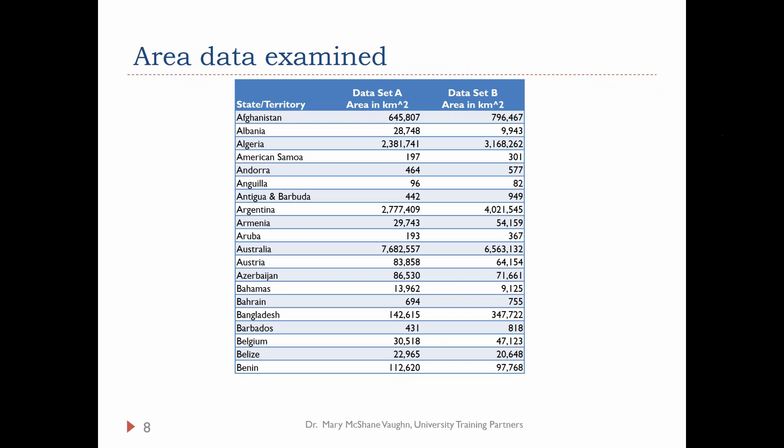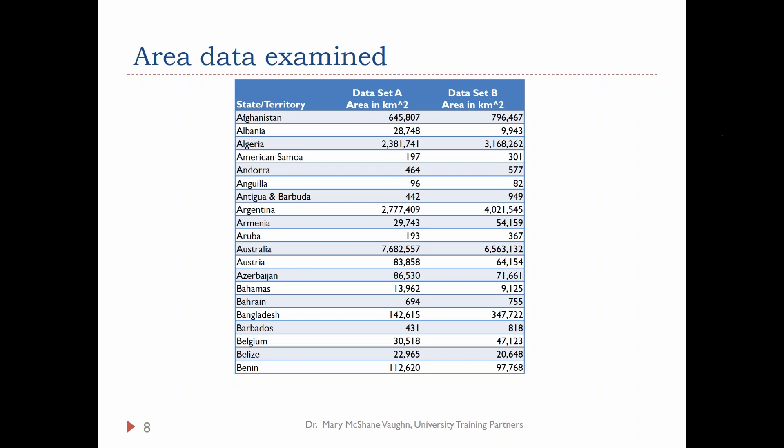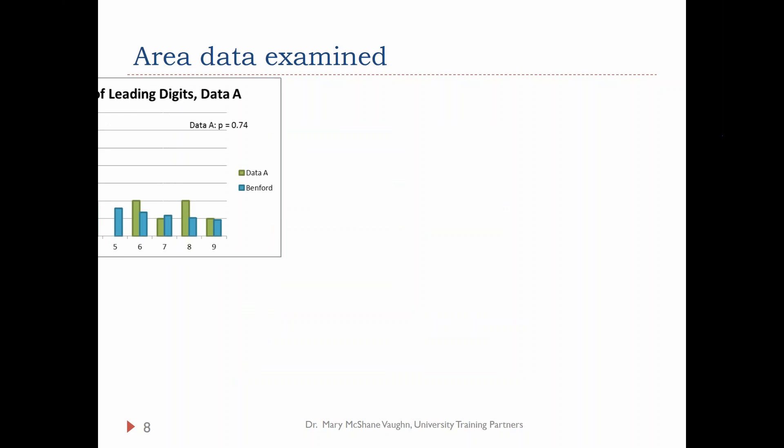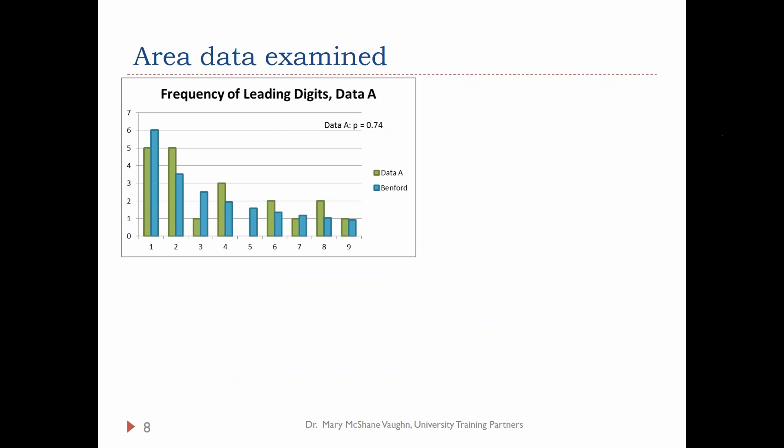Getting back to our areas of countries, knowing what you know now about the Benford distribution, can you look at those two data sets and tell me which one is real — A or B? Now it seems like the opinion has turned and we have data set A. That's because we see there are a lot of areas that begin with 1, and a couple will start with 8, and nothing starts with a 9. Here is the frequency of leading digits for data set A. Benford is in blue and data A is in green, and you can see that data set really does follow a Benford distribution. That is actually the true area data.